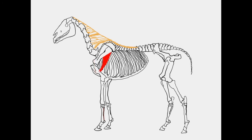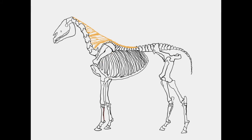The triceps, with three different heads: we have our long head, we have our lateral head, and we have a medial head. Tensor fascia antibrachii muscle, and anconeus.